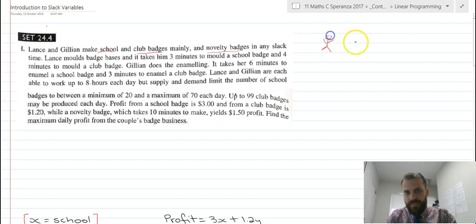So here's Lance. Here's Julian. And they work in like an assembly line. So Lance molds the bases, does the bases. And then once he's molded the base, he passes things on to Julian, and Julian handles the enamelling.